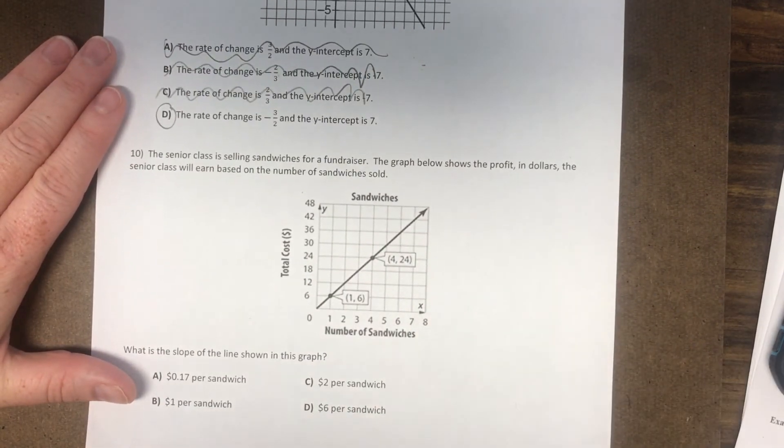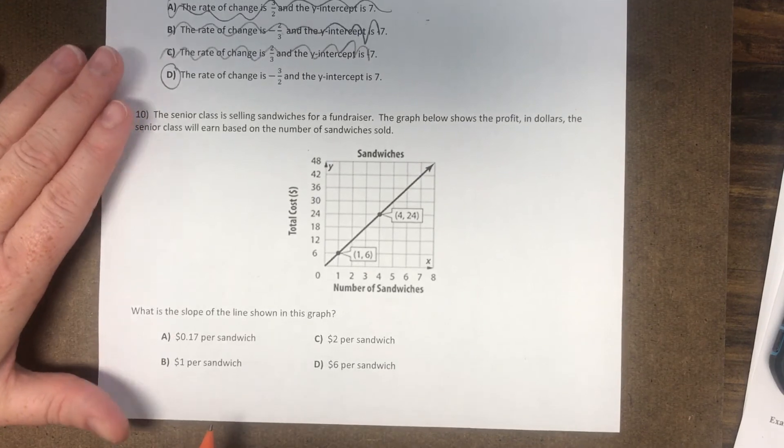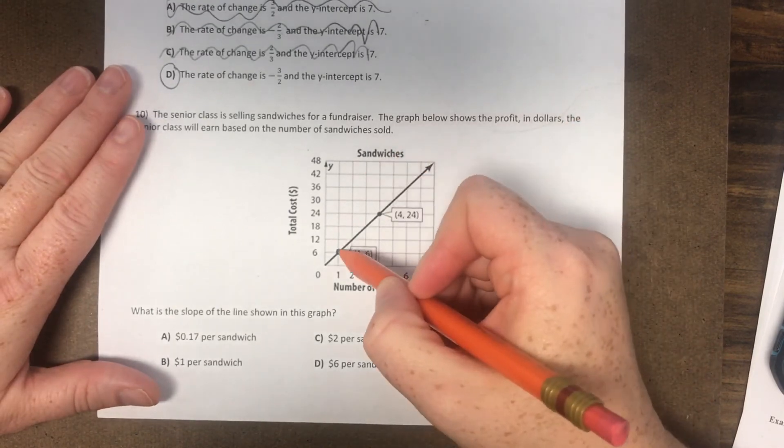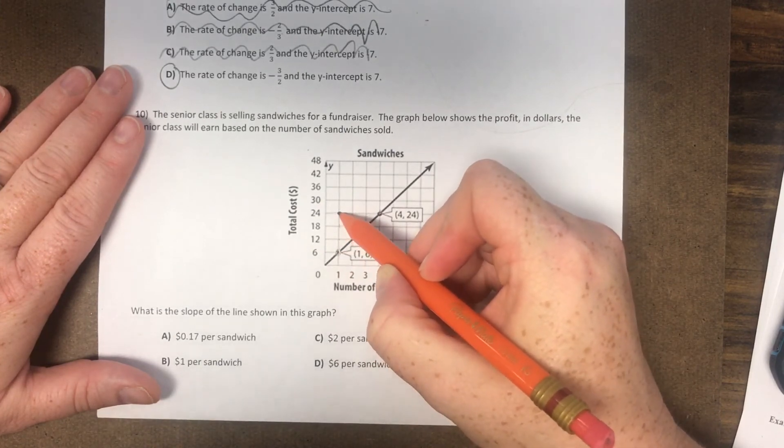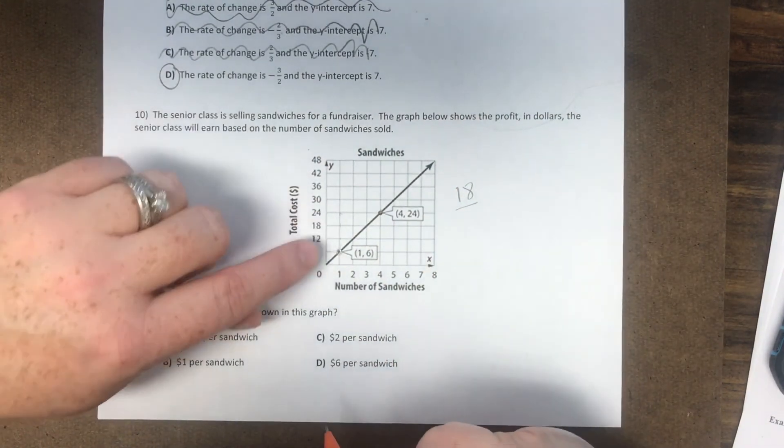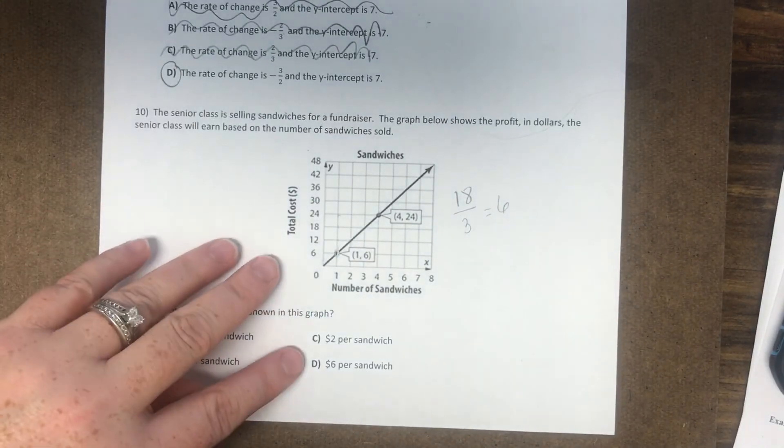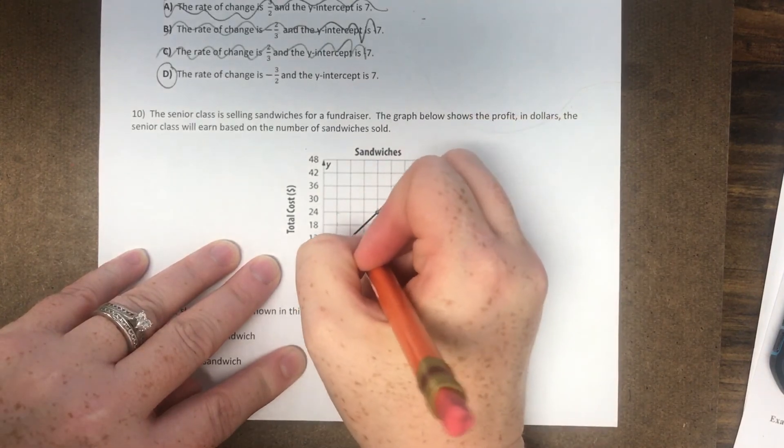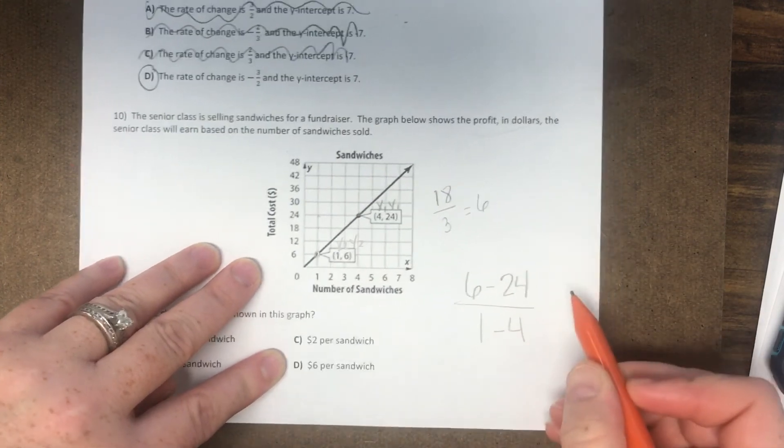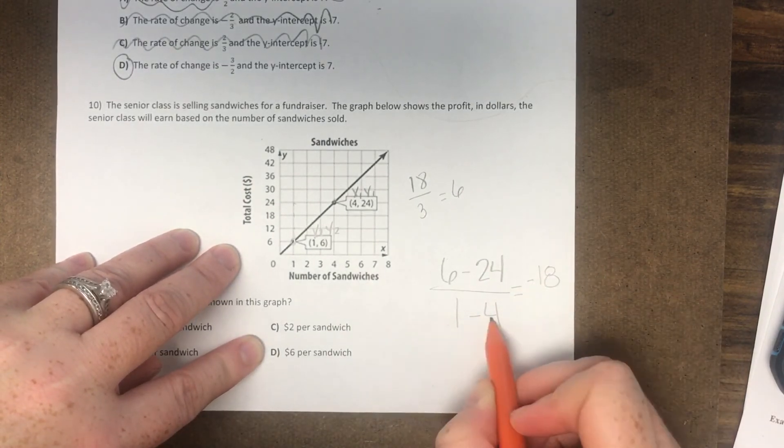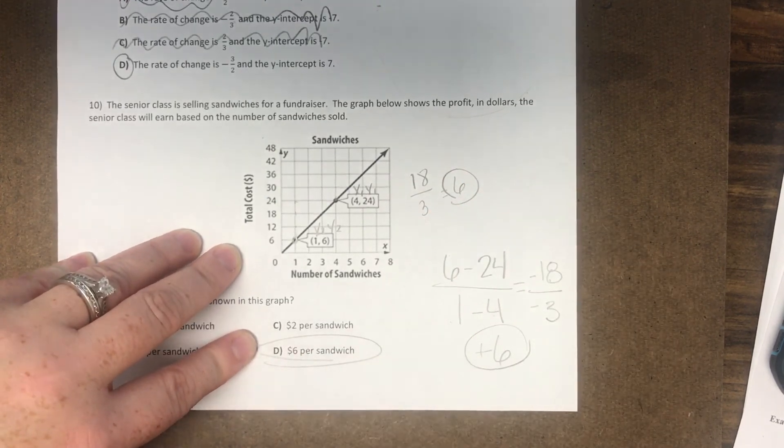Number 10. The senior class is selling sandwiches for a fundraiser. The graph below shows the profit in dollars the senior class will earn based on the number of sandwiches sold. What is the slope shown in the graph? So what we're going to do is we're just going to find the slope. So they gave us two points already. They gave us a point here and a point here. So the rise is 1, 2, 3, but it's actually 6 to 24. So it's actually 18, over the run, which is actually holds 1, 2, 3. So it should be 6. You can also do your point analysis. So you can say X1, Y1, X2, Y2. Y2 minus Y1 over X2 minus X1. 6 minus 24 is negative 18. 1 minus 4 is negative 3. A negative and a negative make a positive. 18 divided by 3 is 6. So both of those yield 6, which is answer choice D.